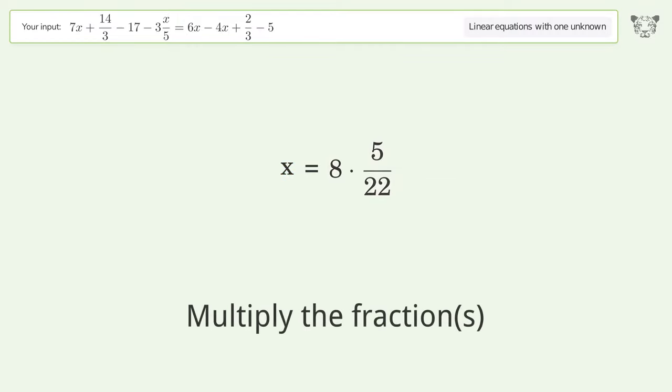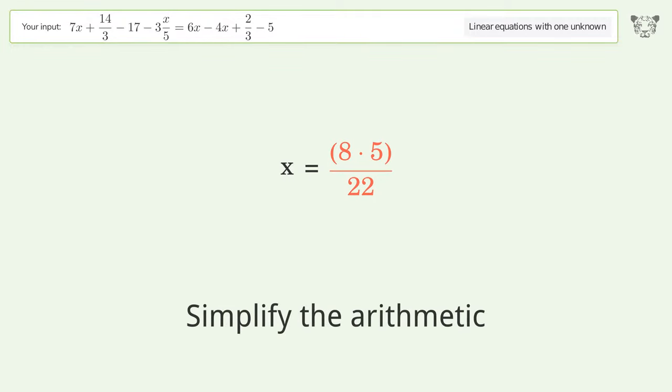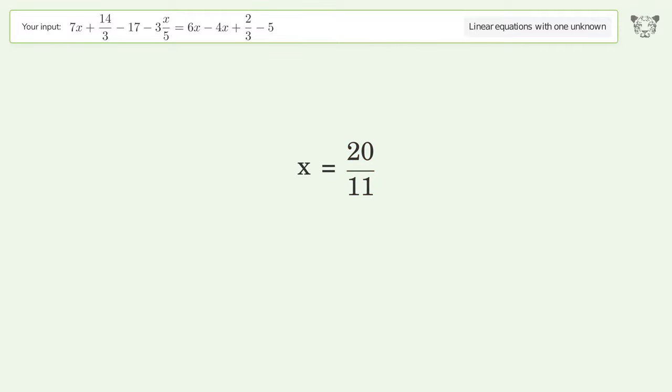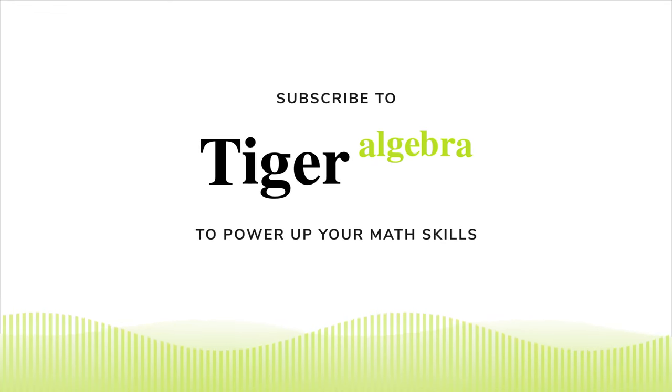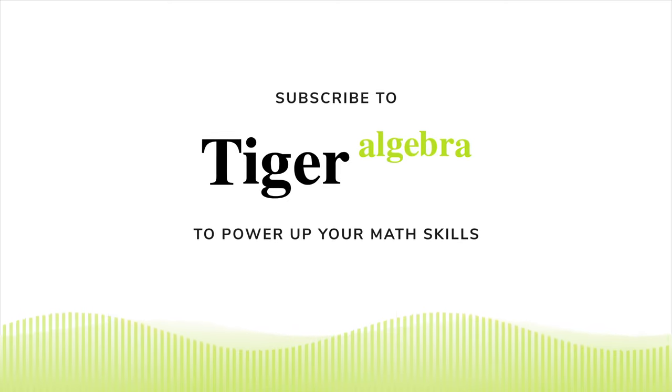Simplify the fraction. Multiply the fractions. Simplify the arithmetic. And so the final result is x equals 20 over 11.